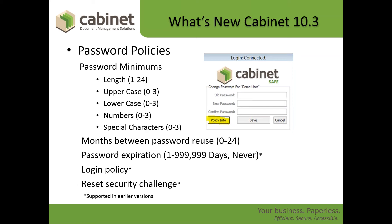If a user is trying to change their password and for some reason it's not accepting it, we have a Policy Information button. All they need to do is click on that and it spells out exactly what's required for the password they're trying to create — for example, if they forgot to include a number, it would state the minimum requirements for that particular password.